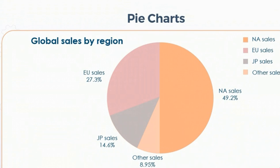You can have an overall view of which one has maximum value. In this diagram, we can see Northern America has maximum sales, other sales have the least number, and the European Union has the second highest. Northern America is represented by one part, Japan is by grey color, European Union by pink, and other sales are cream color. So this is giving information about different regional sales.